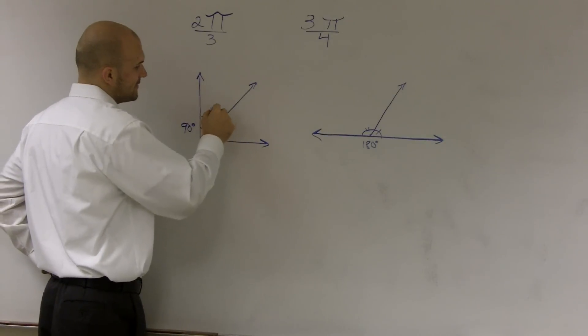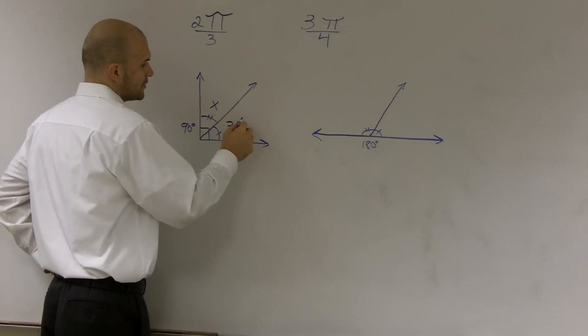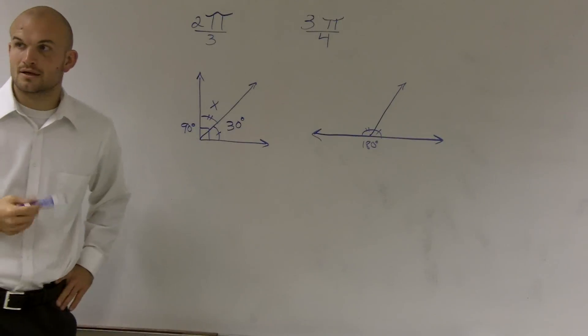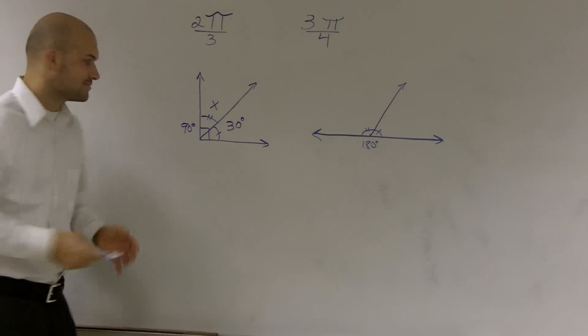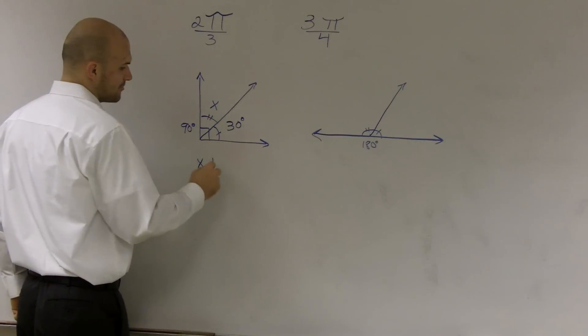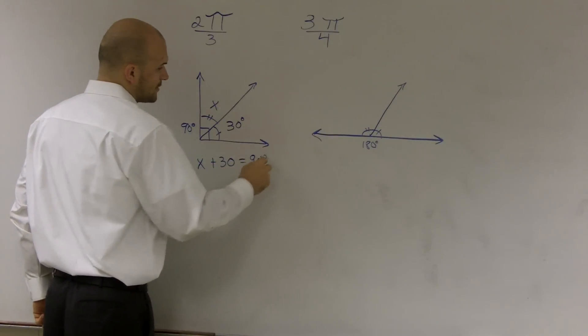Well, actually, we said what if this is x and this is 30 degrees? Find x. Well, we could write the statement that x plus 30 equals 90 degrees.